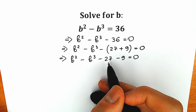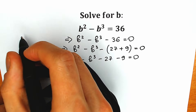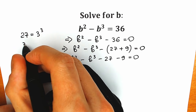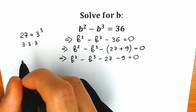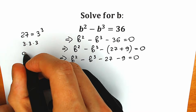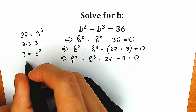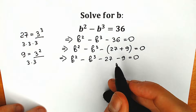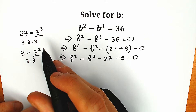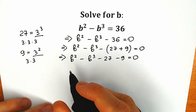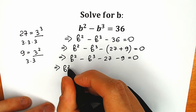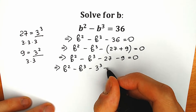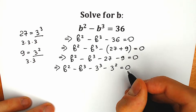Why do we choose 27 and 9? Because 27 is a great constant — we can write 27 as 3 cubed, since 3 times 3 times 3. And 9 is a great constant because we can write 9 as 3 squared, meaning 3 times 3. So let's substitute: instead of 27 write 3 cubed, and instead of 9 write 3 squared. So we have b squared minus b cubed minus 3 cubed minus 3 squared equal to 0.